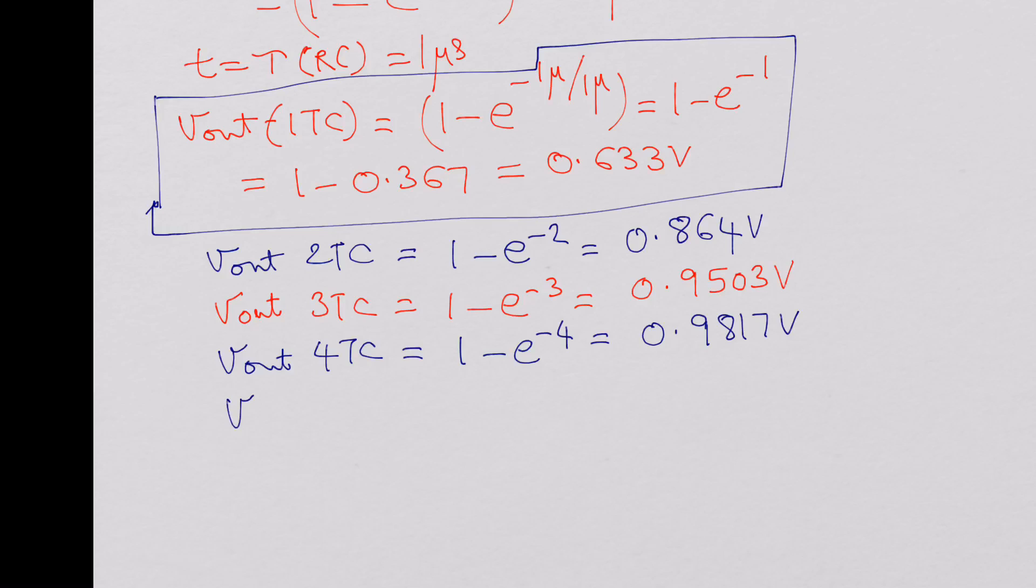V out at 5 time constants is 1 minus e power minus 5, which would work out to 0.9933 volts.